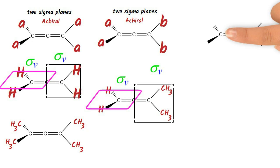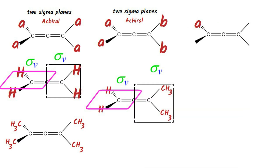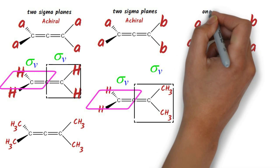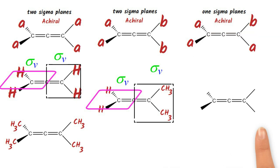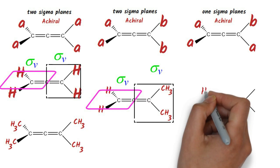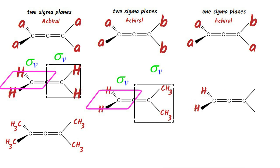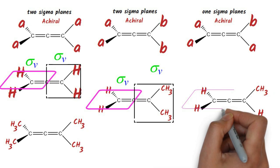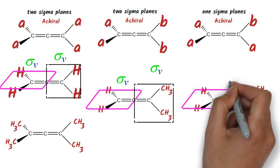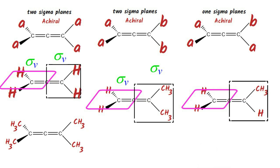This third type of allene has similar substituents on one of the end carbons, and the other end carbon has different substituents. This will have one sigma plane and hence be achiral. As an example, consider an allene with hydrogens attached to the left end carbon and methyl and hydrogen attached to the right end carbon. In this case, only the vertical plane acts as a sigma plane, bisecting the horizontal plane into two equal halves. Thus this will also be achiral.